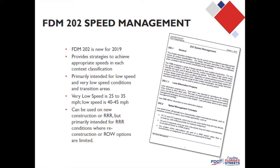This chapter can be used on new construction or on 3R, but it was primarily intended for 3R conditions where reconstruction or right-of-way options are limited. It is possible and encouraged to use this for new construction. If you are planning a new alignment, you're encouraged to look at FDM 202 and the speed management techniques here, particularly those related to horizontal curvature, to ensure your roadway alignment will be at an appropriate speed for the context classification.